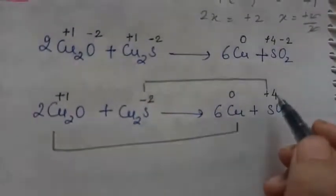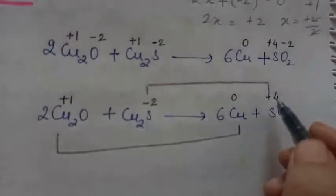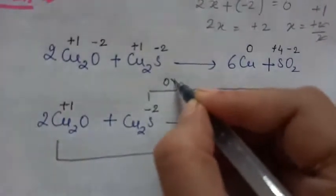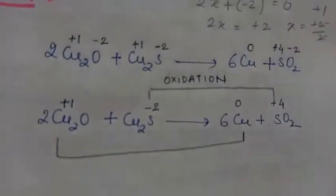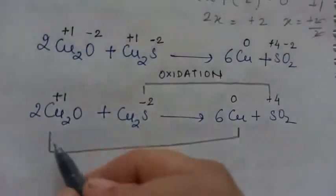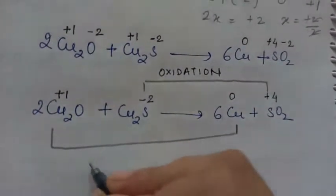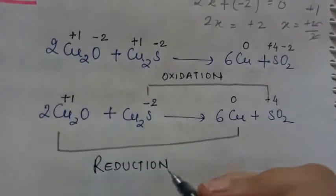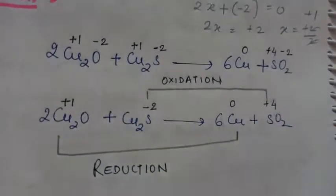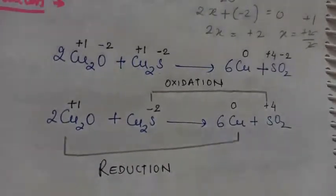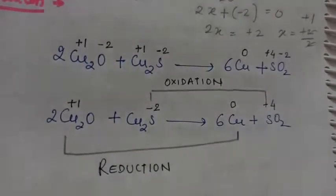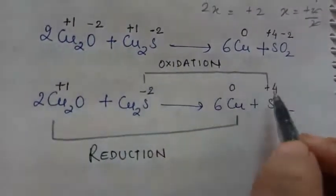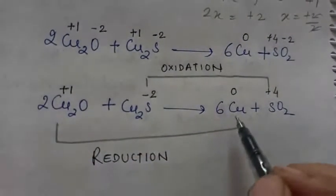Here, sulfur goes from −2 to +4, which is an increase in positive charge, so this is oxidation. Copper goes from +1 to 0, which is a decrease in positive charge, so this is reduction. As I told you previously: increase in positive charge or decrease in negative charge means oxidation; decrease in positive charge or increase in negative charge means reduction.